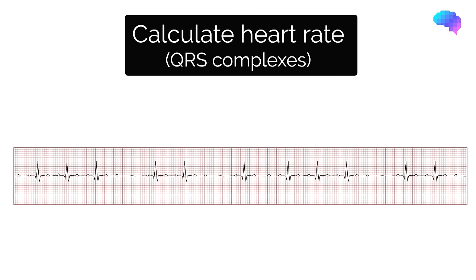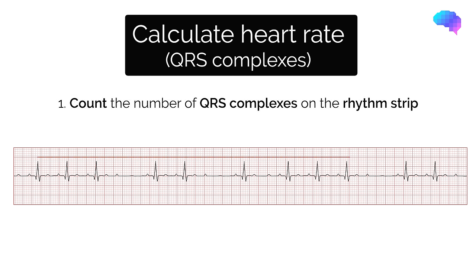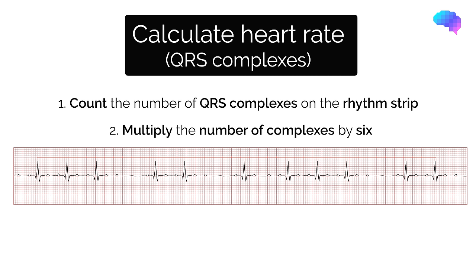This second method is useful when the heart rhythm is irregular. In this situation, we can't use the RR interval method as the RR interval will vary. To use this method, you need a standard ECG strip, which is typically 10 seconds long or 50 large squares. Count the number of QRS complexes on the rhythm strip, then multiply the number of QRS complexes by 6, giving you the number of QRS complexes within one minute. In this example, we have 11 QRS complexes, therefore when we times this by 6 we get a heart rate of 66 beats per minute.